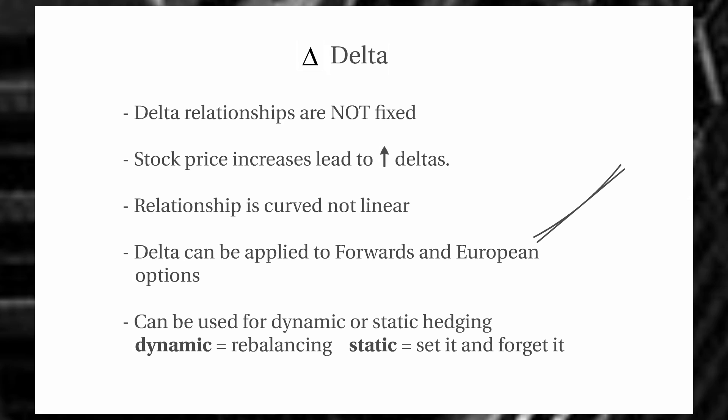Deltas can be applied with forwards as well as options, and with European and American options. This is often used for hedging purposes — we can use our options to hedge the value of a given number of stocks. We can do this in a dynamic sense, constantly rebalancing to account for the changes in delta. Or statically, taking delta at a certain point and setting it and forgetting it, which reduces effectiveness over time as delta moves away from where we set our hedge, but is much less expensive than constantly rebalancing.